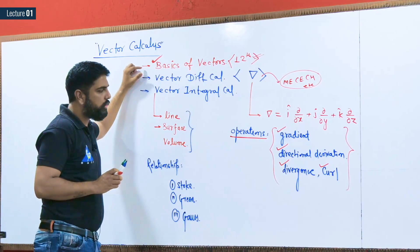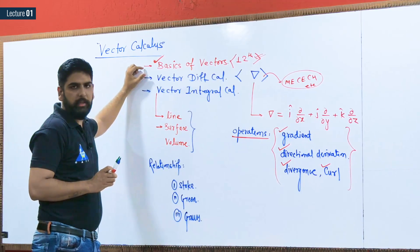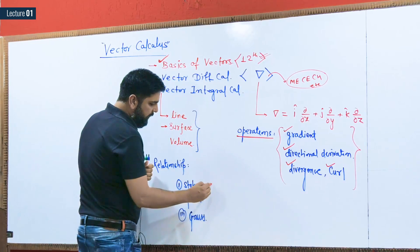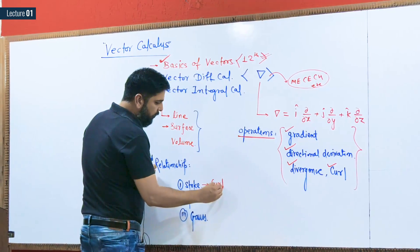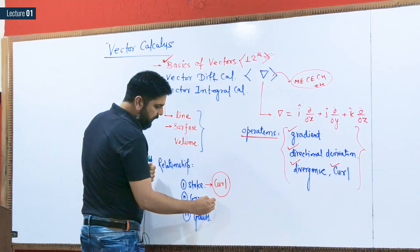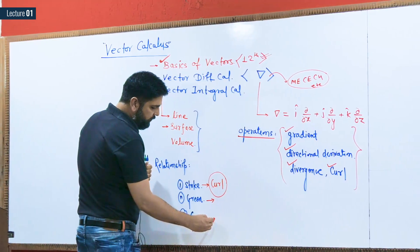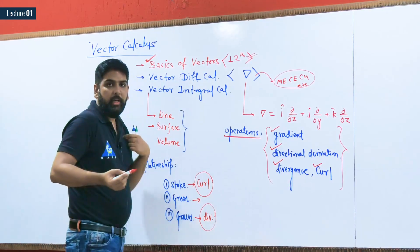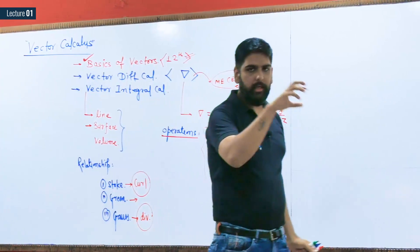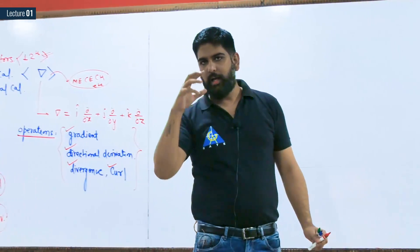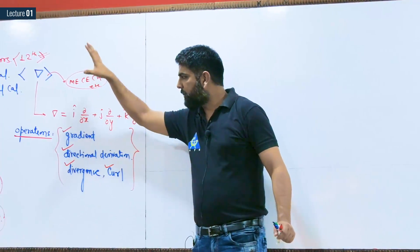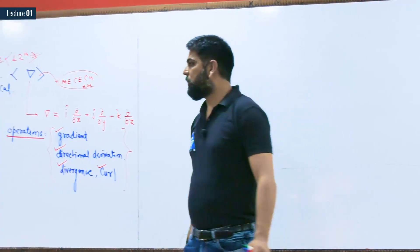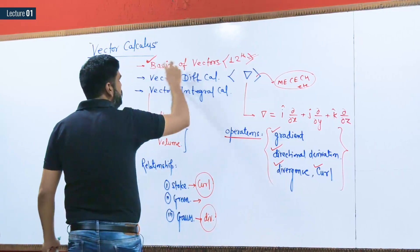After gaining knowledge of gradient, directional derivative, divergence, and curl, we move to the theorems — the relationships. In Stokes' theorem we need the concept of curl; in Green's theorem we also need curl; and in Gauss' theorem we need the concept of divergence. So we must build the basics first, then study divergence and curl, and after that do the theorems.